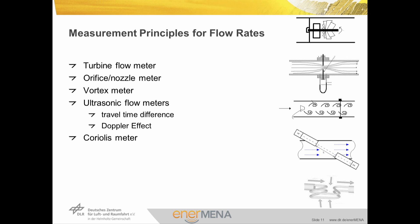All above principles measure the volumetric flow rate, which needs to be converted to mass flow rate using the fluid density. The only way of directly measuring mass flow rate is by making use of the Coriolis principle. The flow is diverted via two curved parallel and counter-vibrating tubes. The force required for acceleration and deceleration of the HTF introduces a time shift in their vibration, the magnitude of which depends on the mass flow rate. Coriolis meters benefit from very high accuracy and low uncertainty.